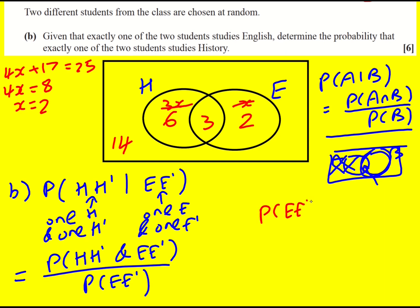For the probability of exactly one person studying English: I can either have the first person studying English — 5 over 25 — and the second person not studying English — 20 over 24. Or the first person not studying English — 20 over 25 — times the second person studying English — 5 over 24. They're the same thing, so we can just multiply by 2. That is the probability of exactly one person studying English.